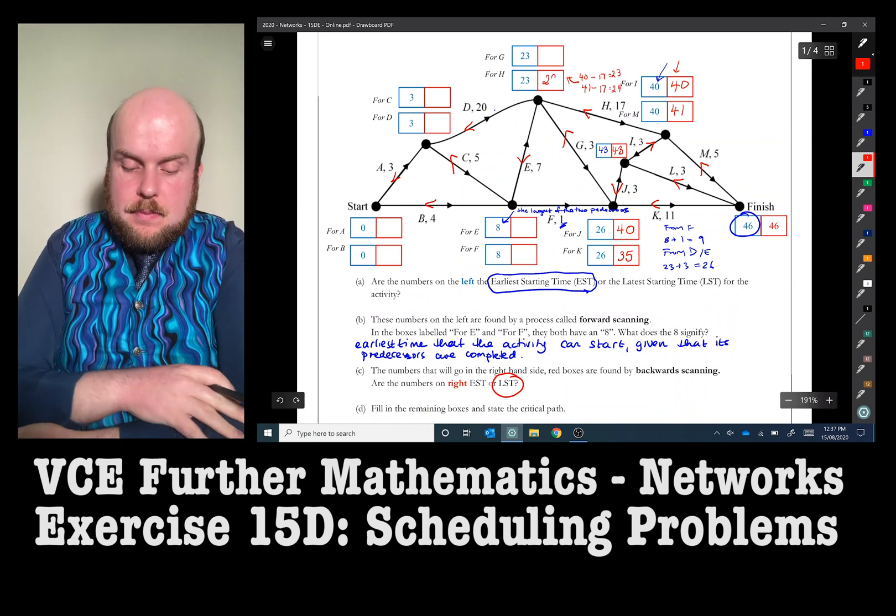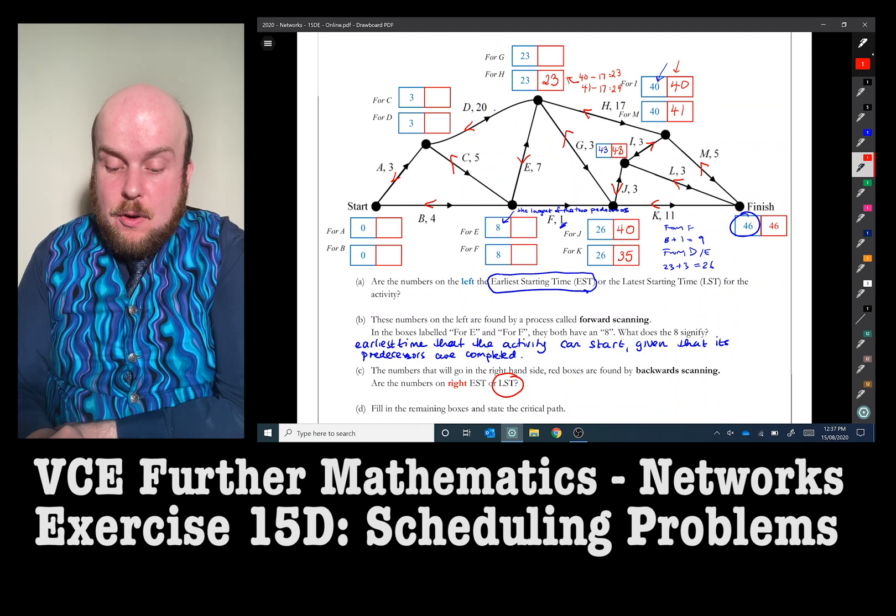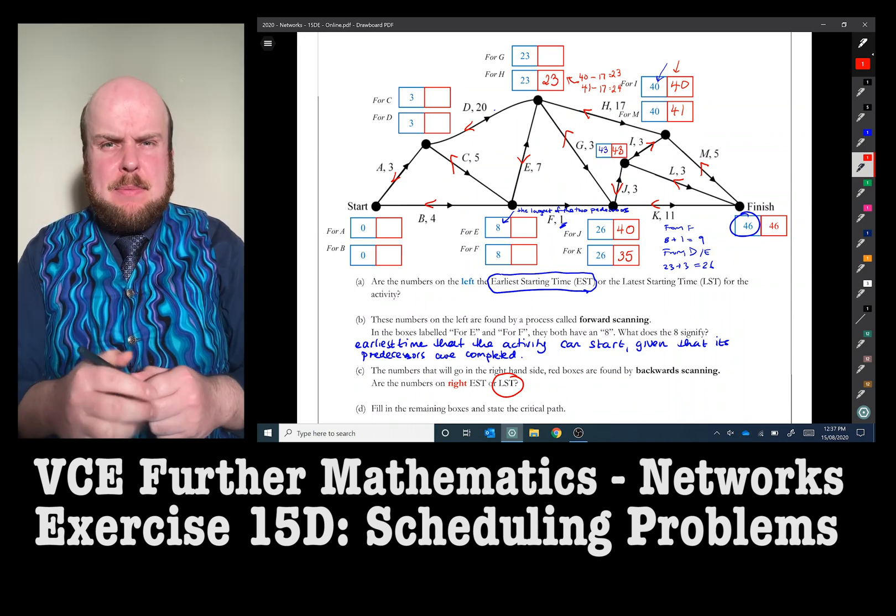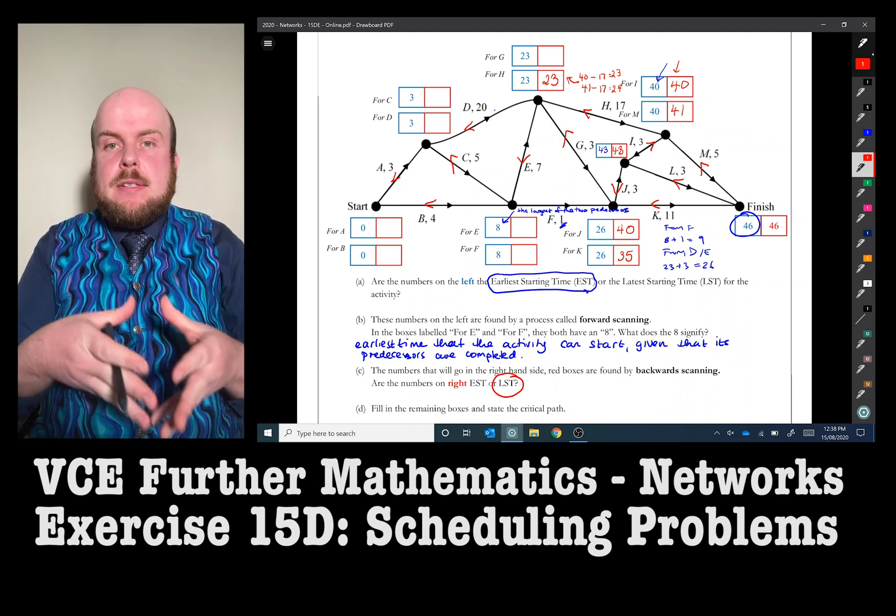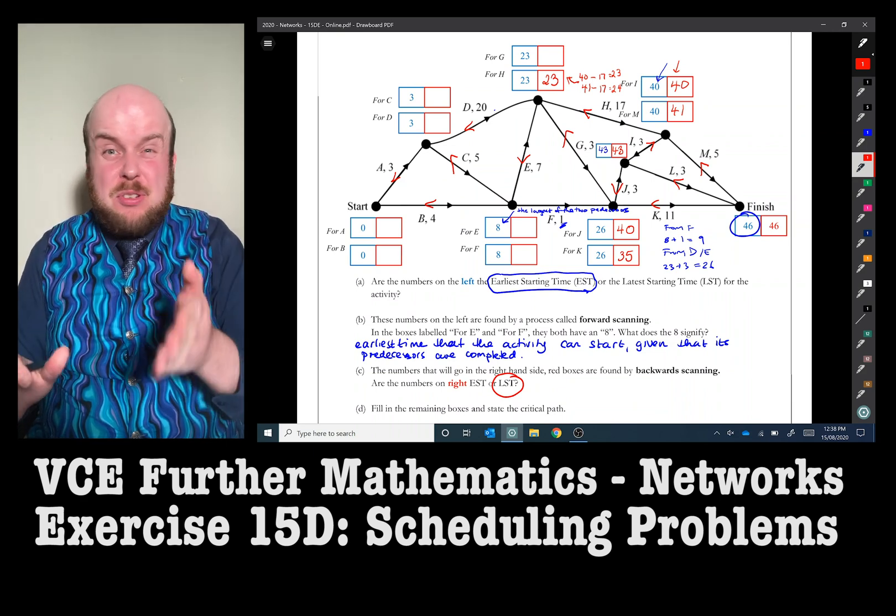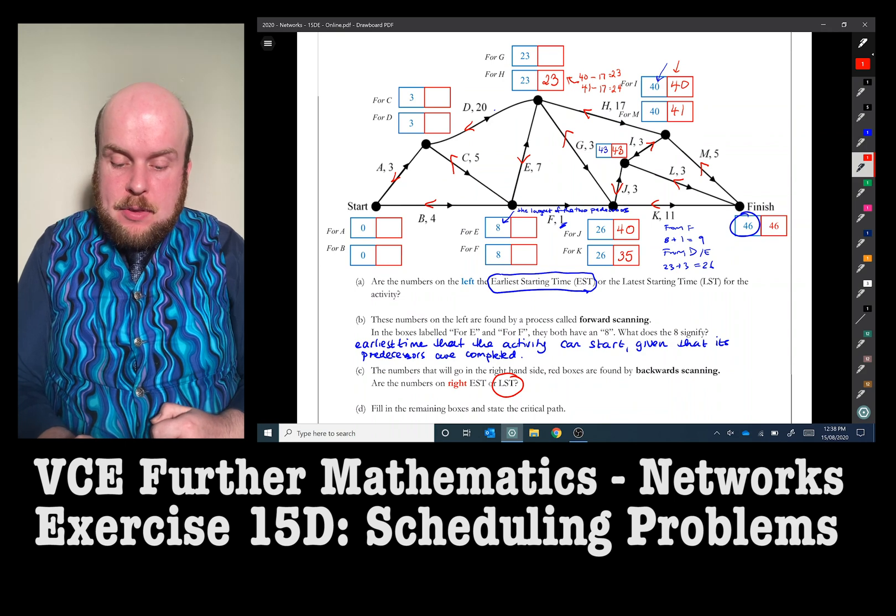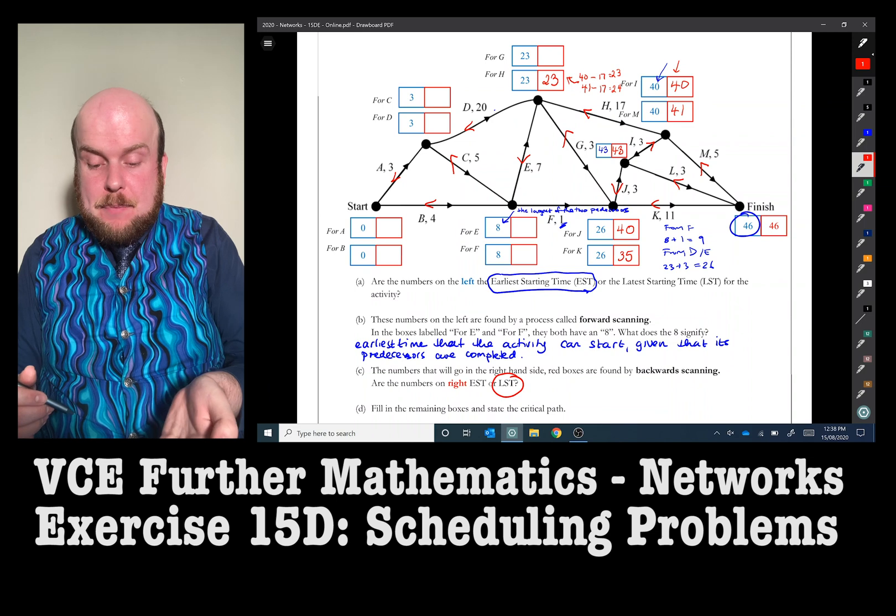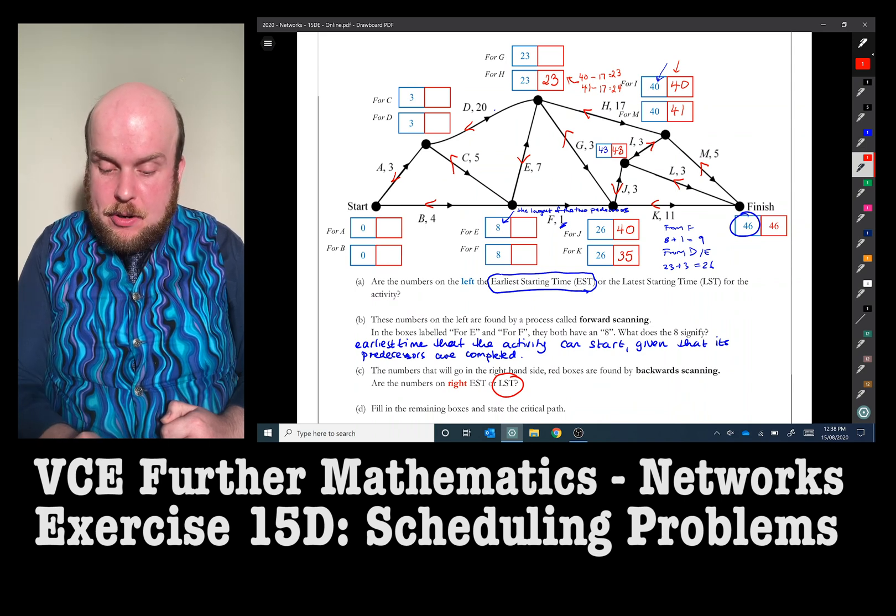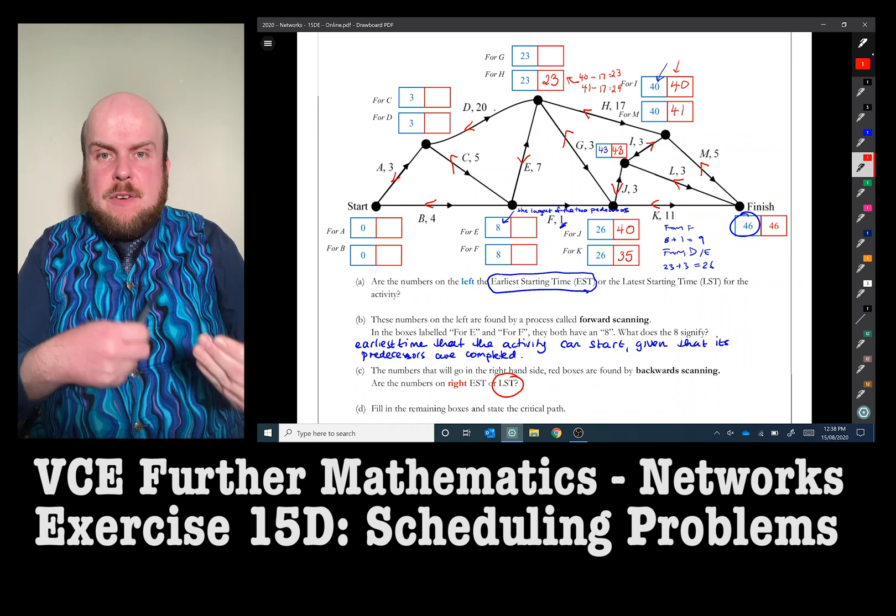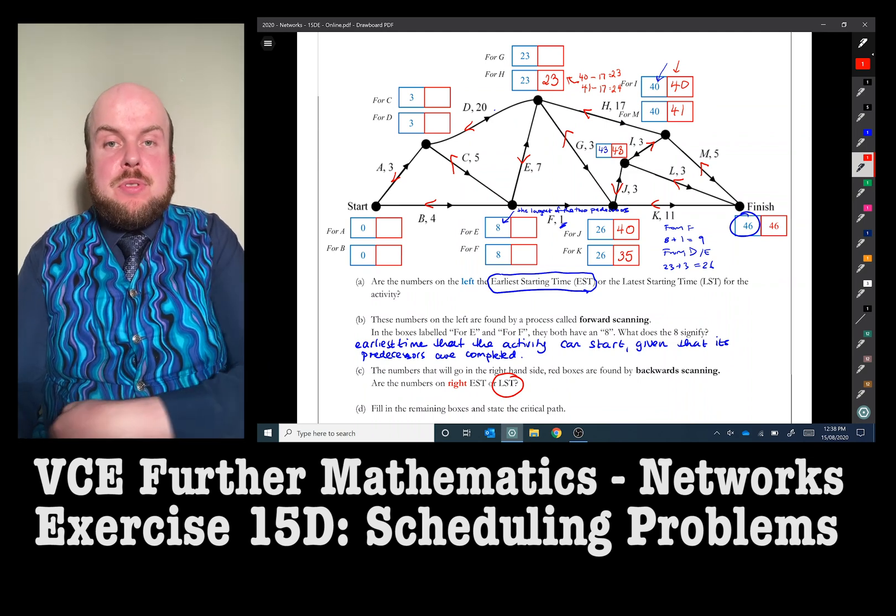So via H we had the choice of either doing 40 take away 17 gets me 23 or 41 take away 17 equals 24. Well, and we choose the smallest number. So why do we choose the smallest number? Well, remember what I was saying about delays. So the later starting time means this is the time I can start it without delaying the project. It's not the earliest time, but if I had some slack time up my sleeve, when can I get this started? Now, if I went with 41 take away 17, 24, that means actually I'd end up stuffing up the project because with, if I wanted to get the activity from, if I don't start it at hour 23, that would delay activity I and so on. And that would stuff up the entire project. So that's why we choose the smallest numbers.